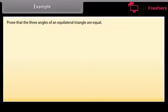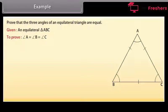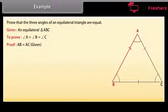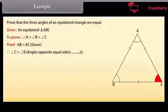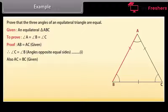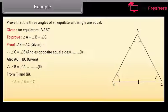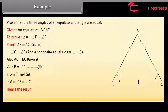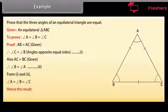Example: Prove that the three angles of an equilateral triangle are equal. Given equilateral triangle ABC, we have to prove that angle A equals angle B equals angle C. Since AB equals AC, angle C equals angle B (angles opposite equal sides). Since AC equals BC, angle B equals angle A. From these two results, angle A equals angle B equals angle C.